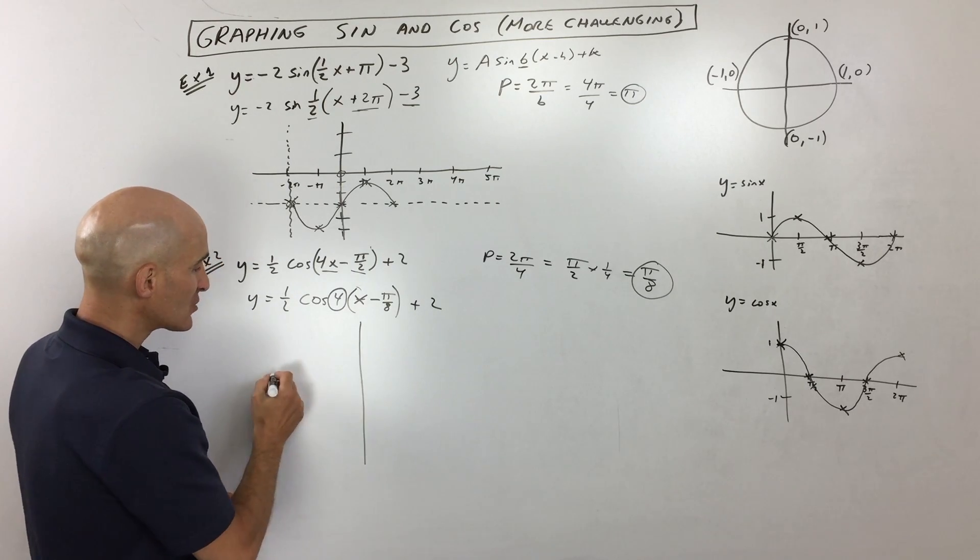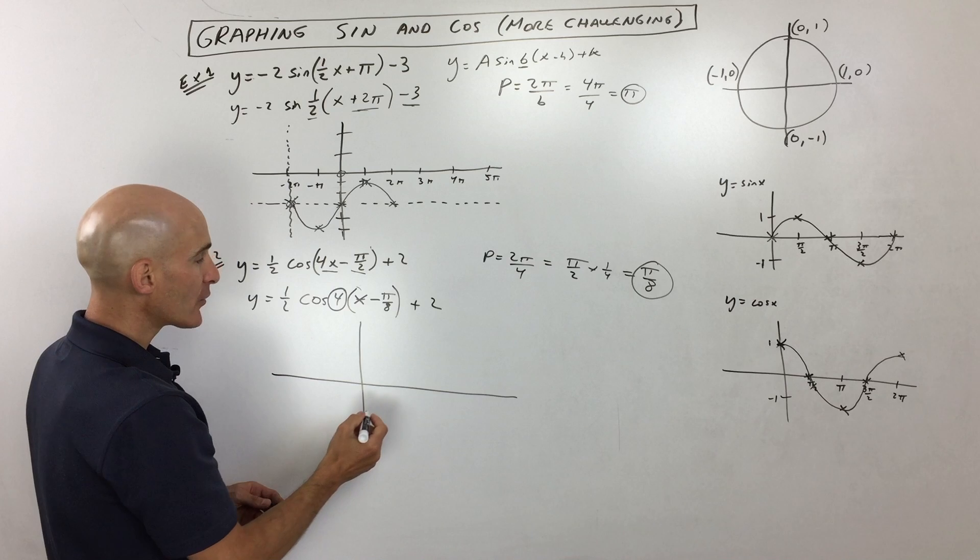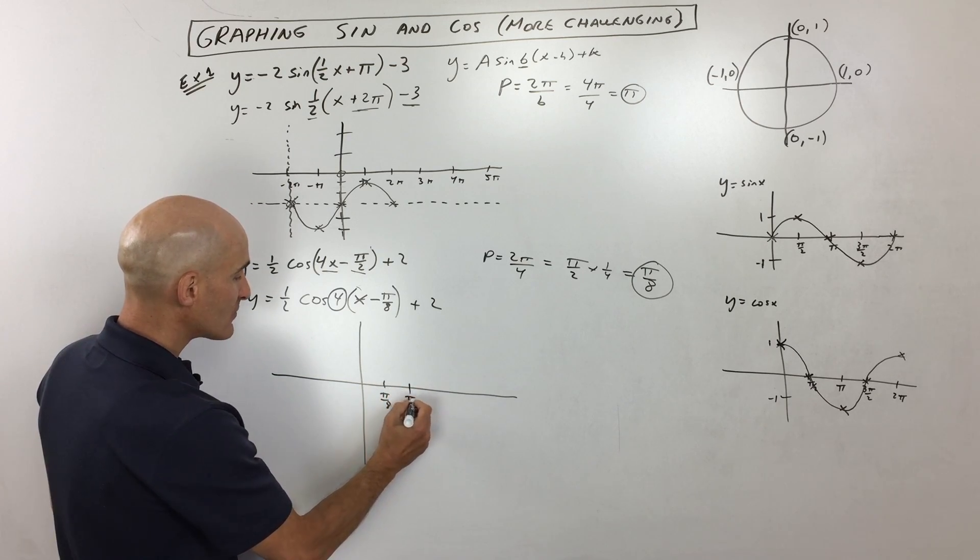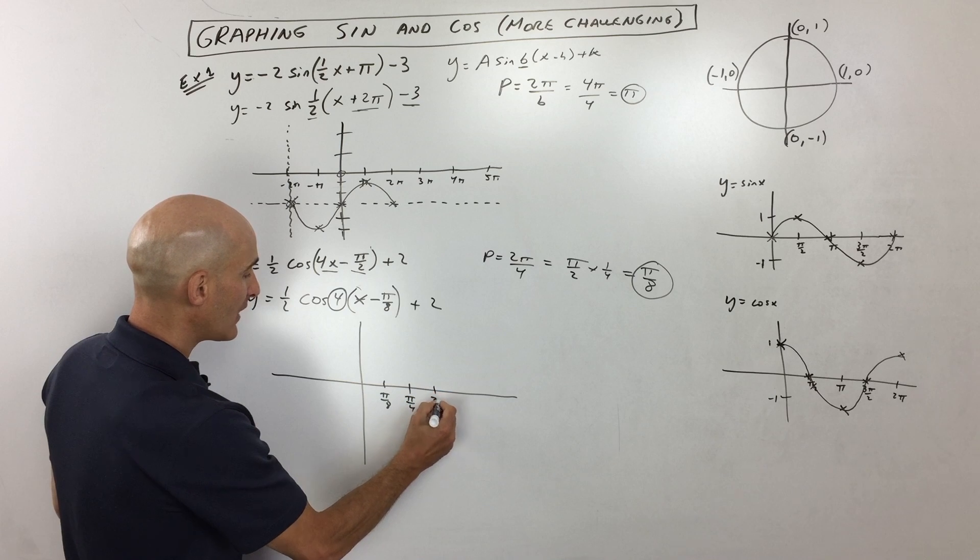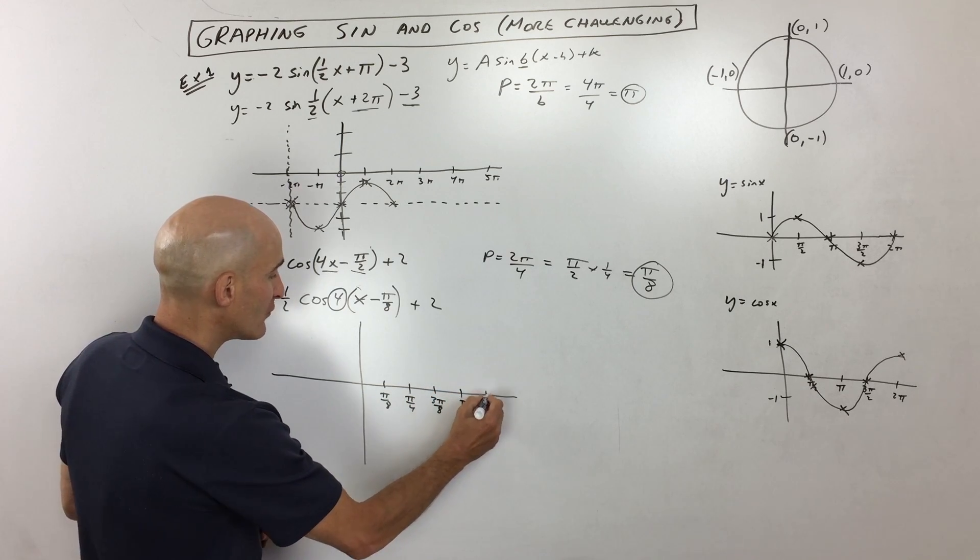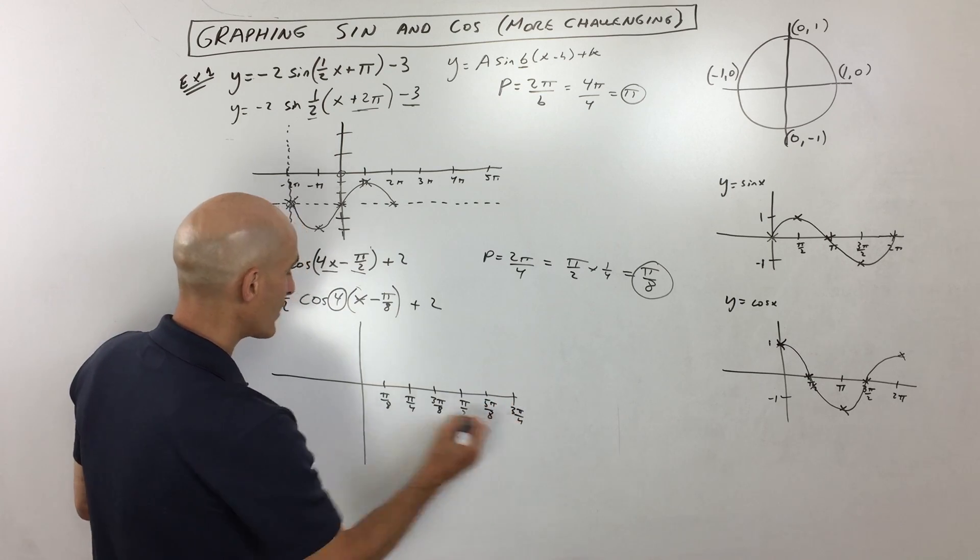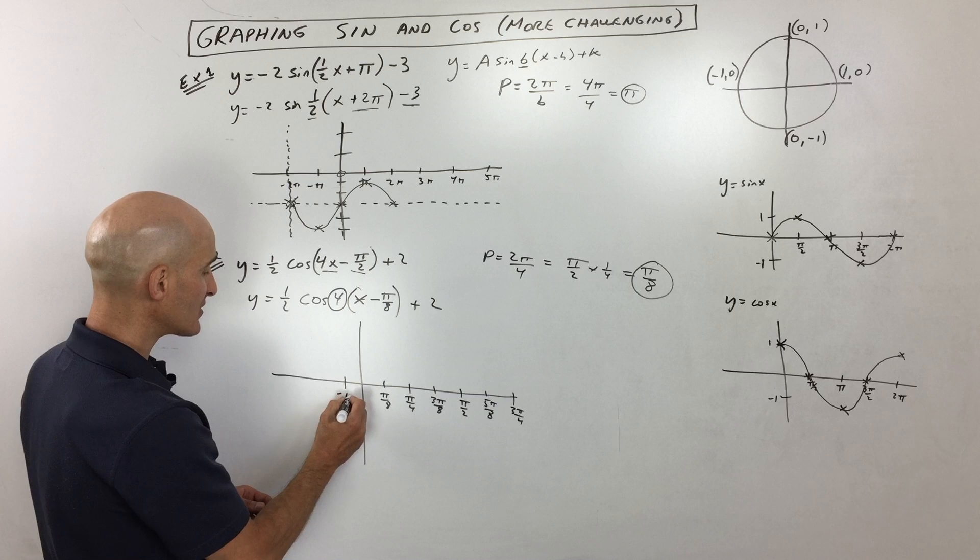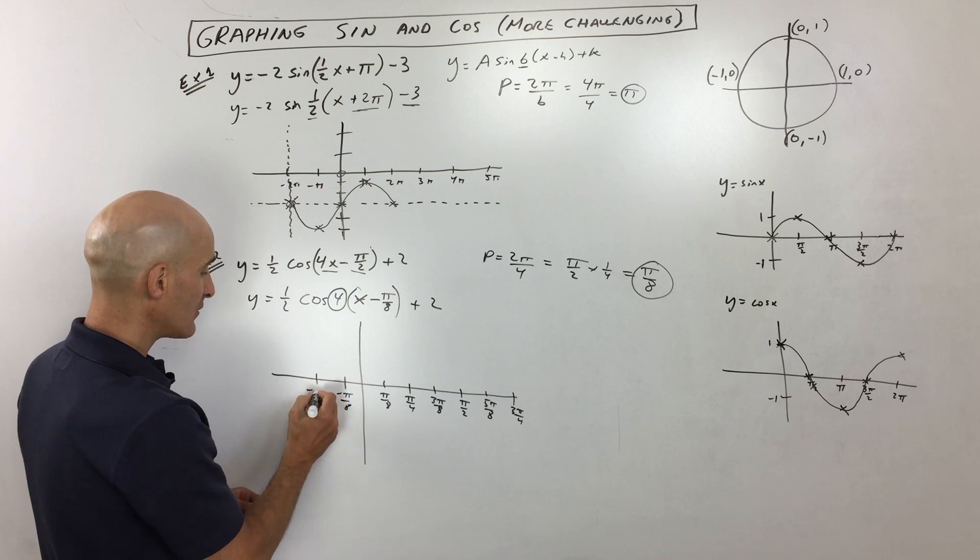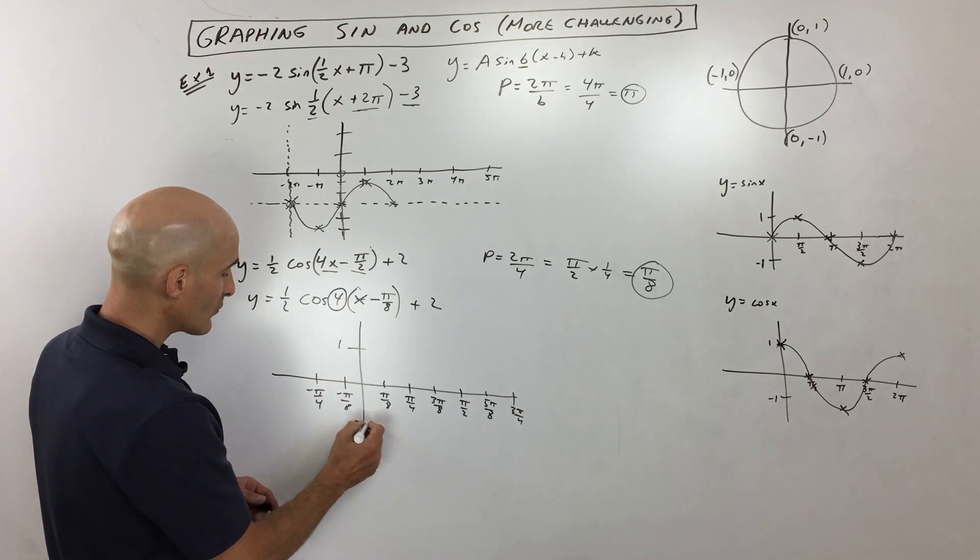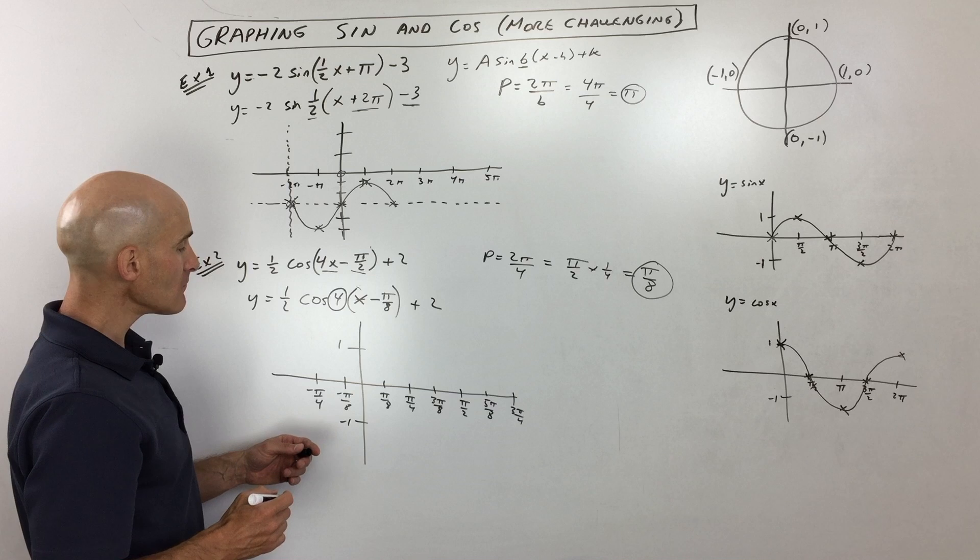So what I'm going to do now is I'm just going to graph this. So I'm going to say one pi over eight, two pi over eight which is pi over four, three pi over eight, four pi over eight which is pi over two, five pi over eight, six pi over eight which is three pi over four, and so on. And we can go this direction as well. So negative pi over eight, negative pi over four which is two pi over eight, and so on. And then let's see over here, we're going to make this one, and we're going to make this negative one.